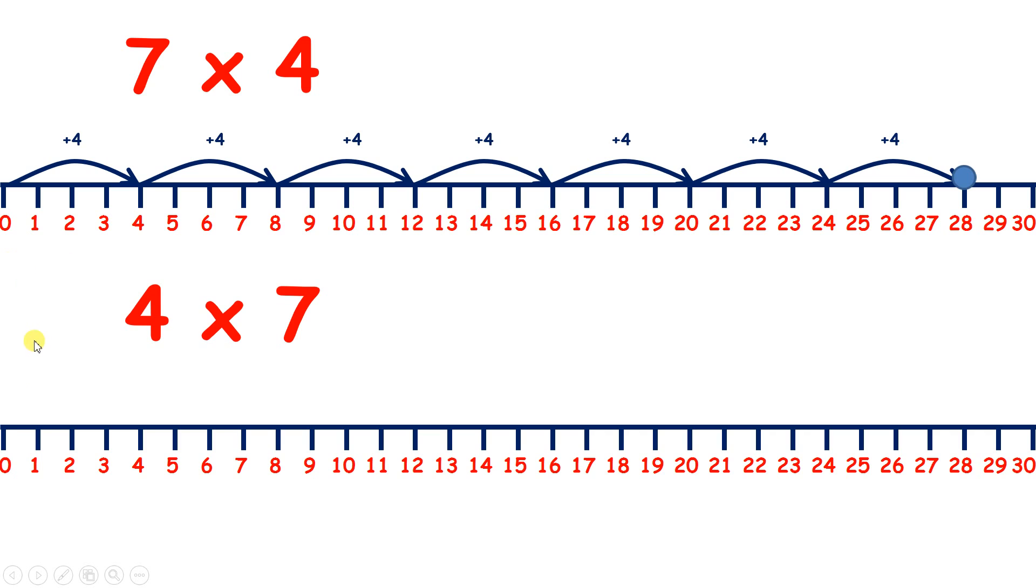Or, counting in steps of 7, 4 times, we have 7. Another 7 gives us 14. Add another 7 to 14, and we have 21. And our fourth 7 takes us to 28.